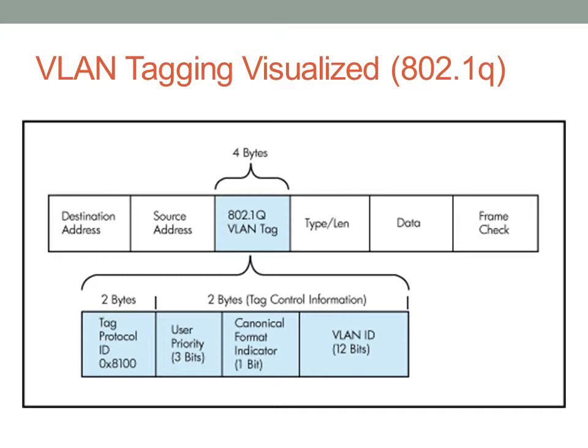When a switch sends data over a trunk link, it places a VLAN tag on that data with the correct VLAN information to segregate it from traffic from other VLANs. The device on the other end receives it, notes the VLAN tag, and forwards it onto the correct VLAN and possibly the correct device.